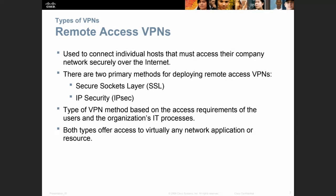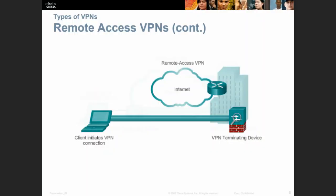Remote access VPNs are used to connect individual hosts that must access their company network securely over the internet. There are two primary methods for deploying remote access VPNs: Secure Socket Layer (SSL) and IP Security (IPsec). The type of VPN method is based on the access requirements of the users and the organization's IT processes. Both offer access to virtually any network application or resource. For the end user, the VPN is transparent — you log in and you might only sense a small delay.